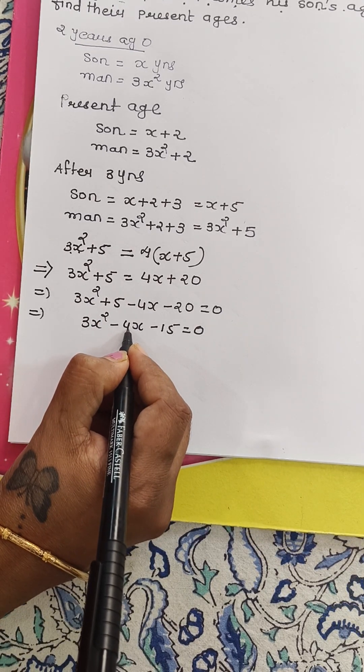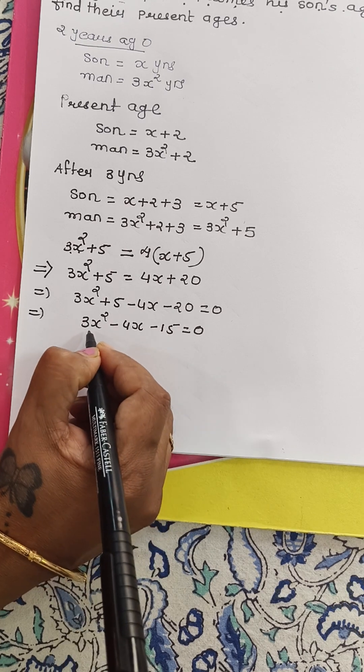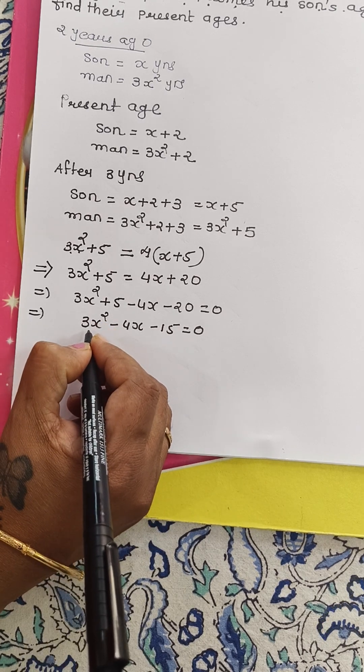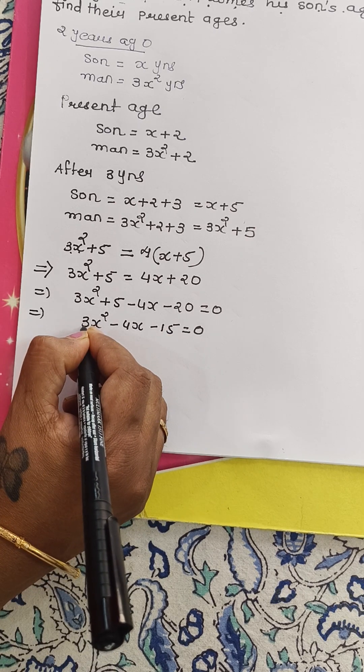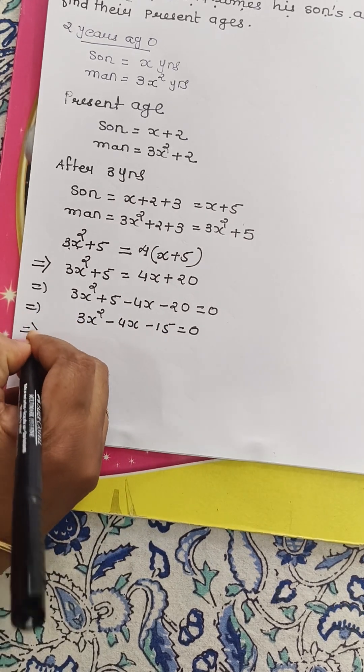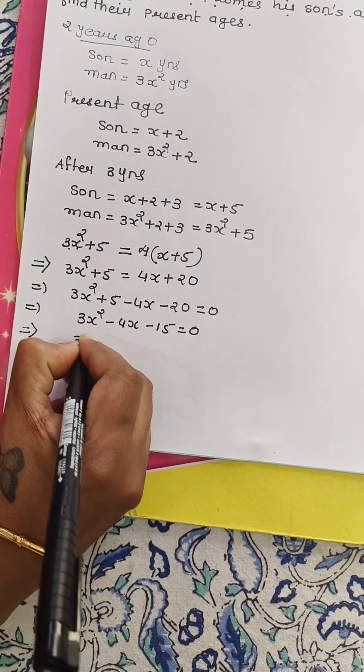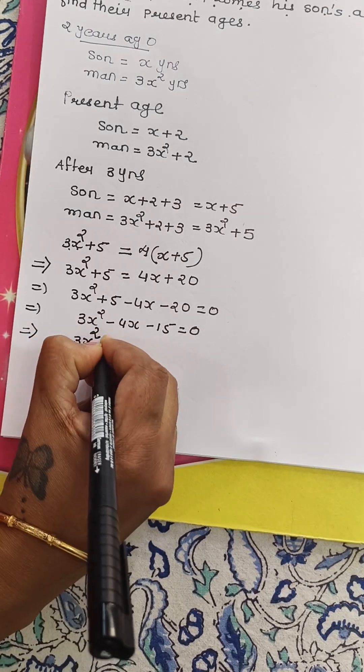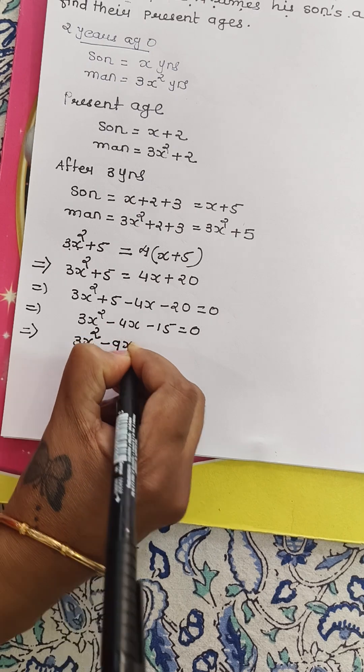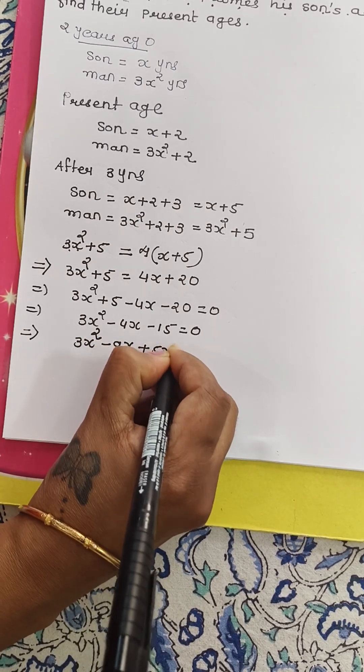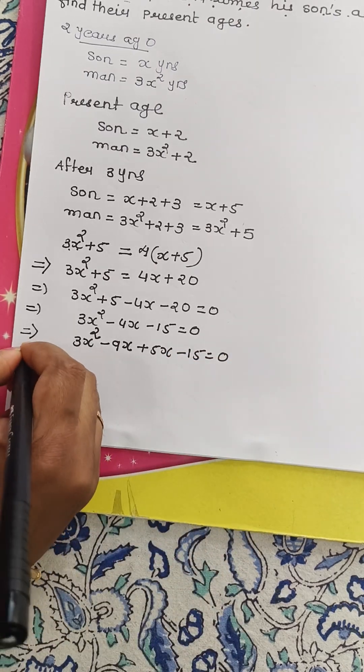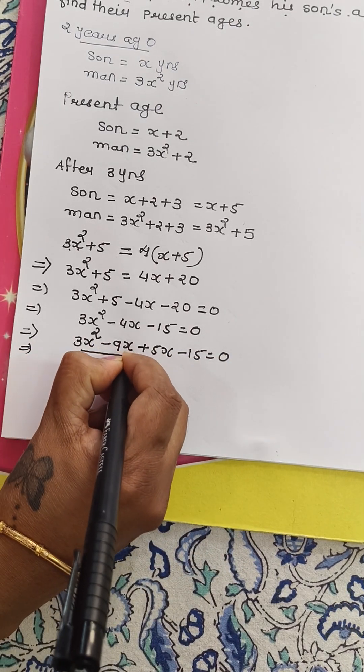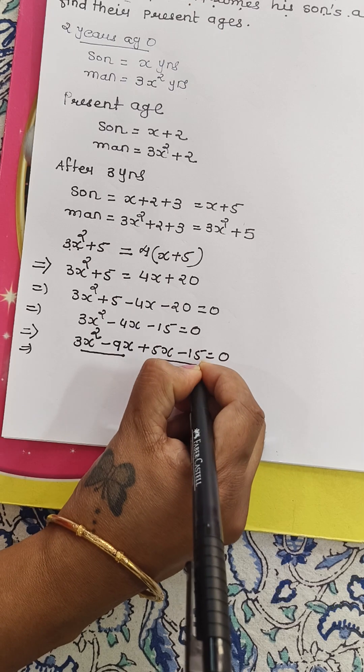AX square plus BX plus C. So let's simplify using factorization method. 15 into 3, 45. So what are the factors of 45? 9 and 5. So 3X square minus 9X plus 5X minus 15 equals to 0.